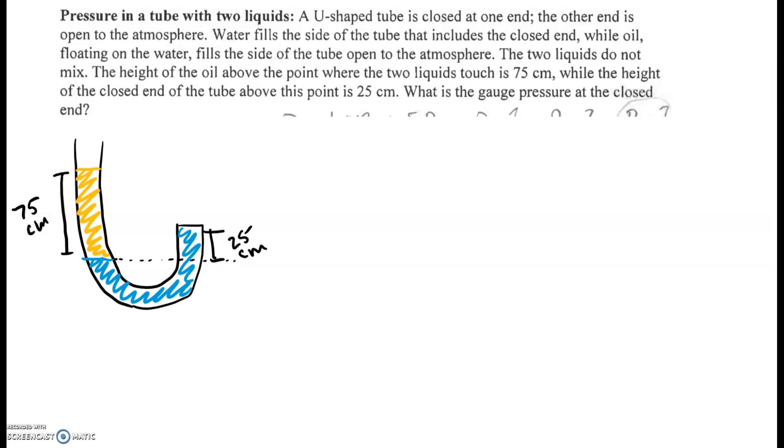Time for a fun example. We're going to find the pressure at the top of the closed end of this tube. The thing about this tube is that there's two liquids. We have a U-shaped tube closed at one end. The other end is open to the atmosphere.